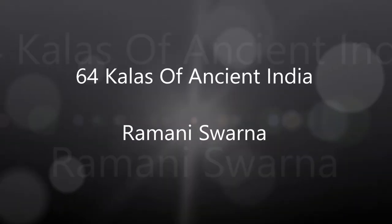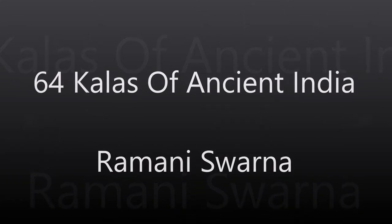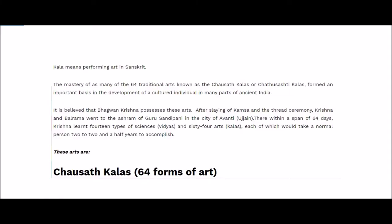In this video I'll be discussing the 64 forms of art, which were discussed and taken care of in the traditional Indian system. They were also called the Chausat Kala in the traditional educational system. Here we will see the definition of Kala, so that I can go in a flow and later understand what it was taking care of.